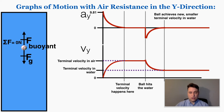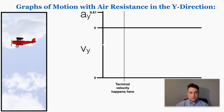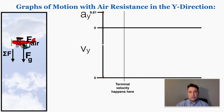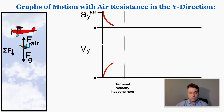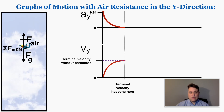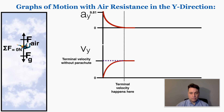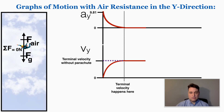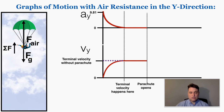This same type of graph also applies to other physical situations. Skydivers are a popular example in physics when discussing air resistance. When the skydiver dives out of the plane, the only force on them in that moment is gravity because they're not moving yet, so there's no air resistance. Their acceleration starts at 9.81, and as they begin to fall the force of air resistance gets bigger and bigger, following the same graph pattern as before until they hit a terminal velocity without their parachute, then falling at that rate for a time. Then this is the point where their parachute opens — the parachute greatly increases the force of air resistance because of its large surface area.